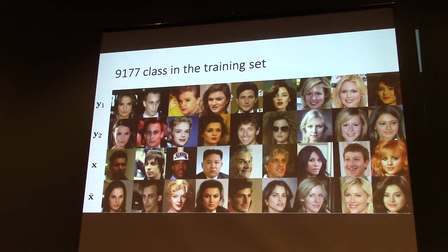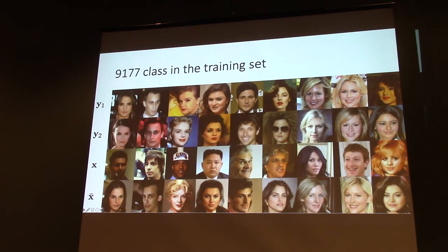This model also works for humans. Here, each identity is a class. Given this gentleman and a few images of a lady, we can translate the gentleman to the lady — the pose is roughly the same, but the appearance matches the lady. And in another example, the hair is replaced, and we translate a known person to a female appearance.